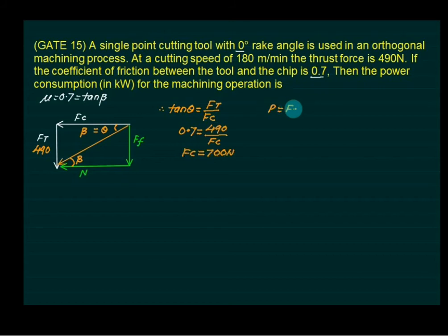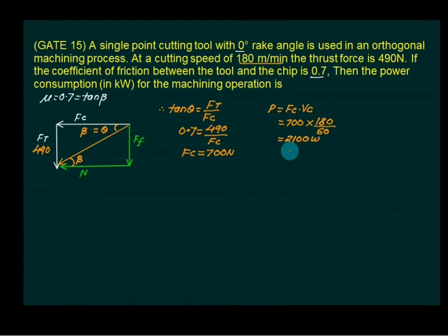Power consumption is simply the product of cutting force multiplied by cutting velocity. Cutting force is 700 N and cutting velocity in meters per second gives 700 × (120/60) = 1400 W — approximately 2.1 kilowatts.